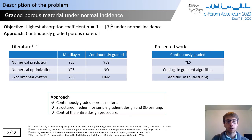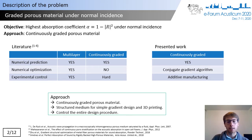In this work, we will optimize continuously graded porous materials using a conjugate gradient algorithm for their optimization and 3D printing for their manufacturing. At the end, what we want is to control the entire design procedure.